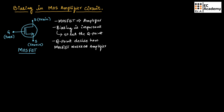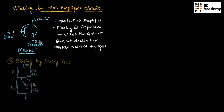If we consider the symbol of a MOSFET, it consists of three terminals: drain, gate, and source. The voltage between gate and source is generally known as VGS, and the voltage between drain and source is known as VDS. Now, let us understand biasing by fixing VGS.